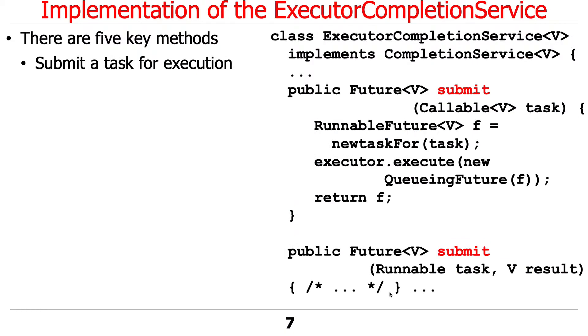Here's how the methods actually work. Here's the submit method — the thing that takes a task, either a two-way task or a one-way task, and gives it to the executor to run in a pool of threads.